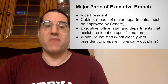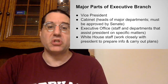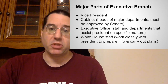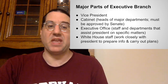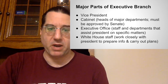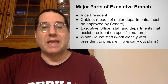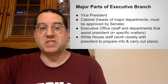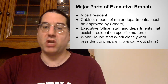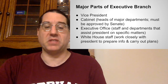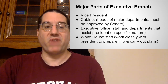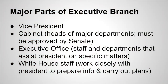Beyond the vice president, you have the cabinet. The cabinet is the term for the heads of the executive departments — large government organizations established by Congress with responsibility for a significant area of American society. The executive office of the president includes a number of advisory groups and departments with specific roles designed to give the president information he or she needs and help the president carry out plans. The executive office also includes the White House staff, a group of advisors and professionals who help with strategy, communication, and the day-to-day affairs of the executive branch.